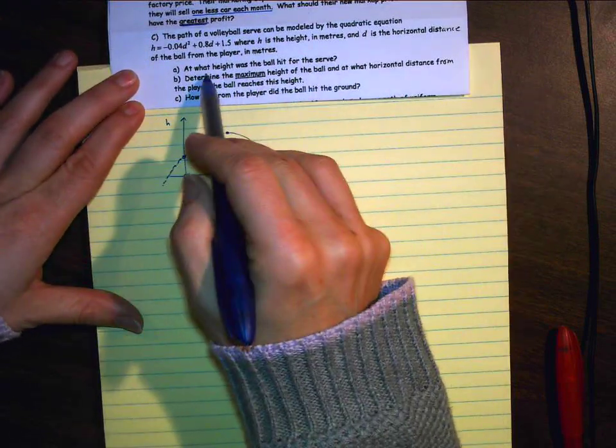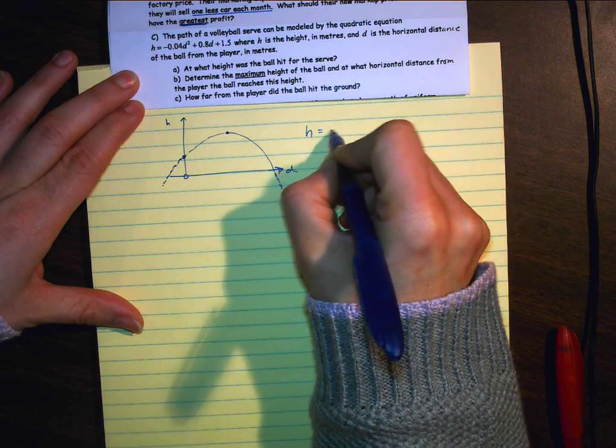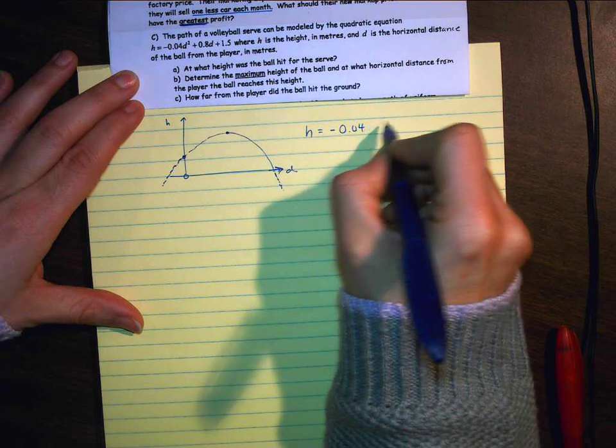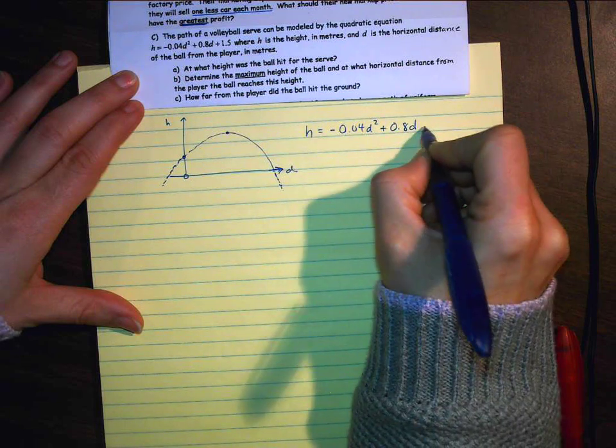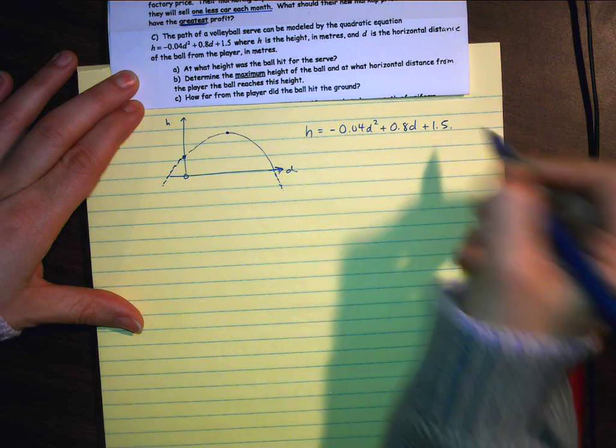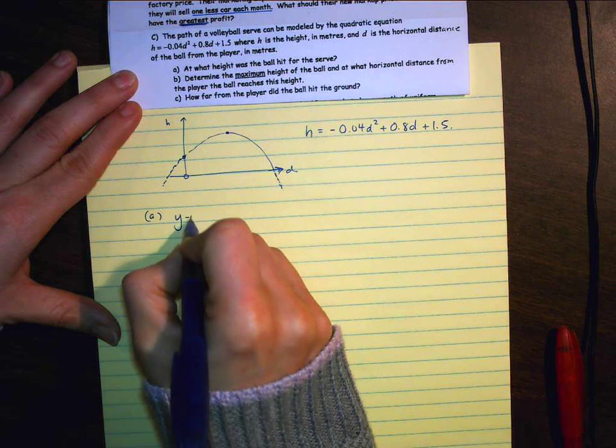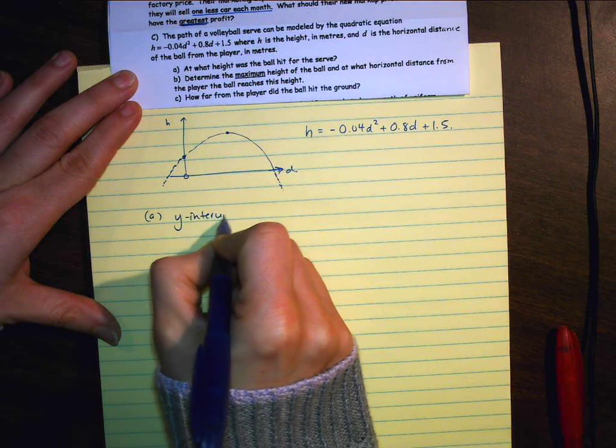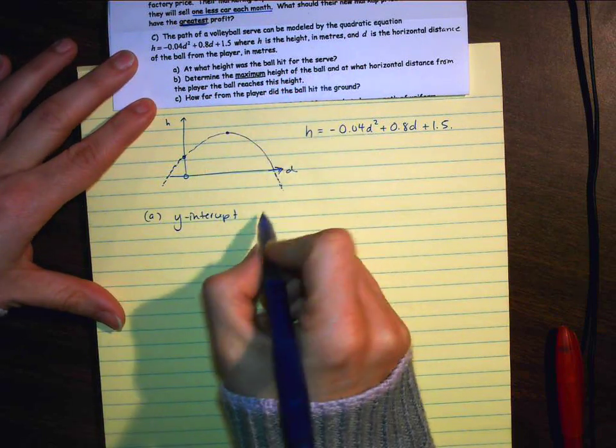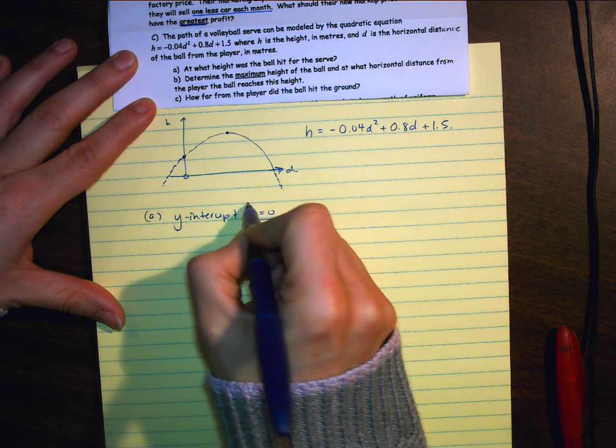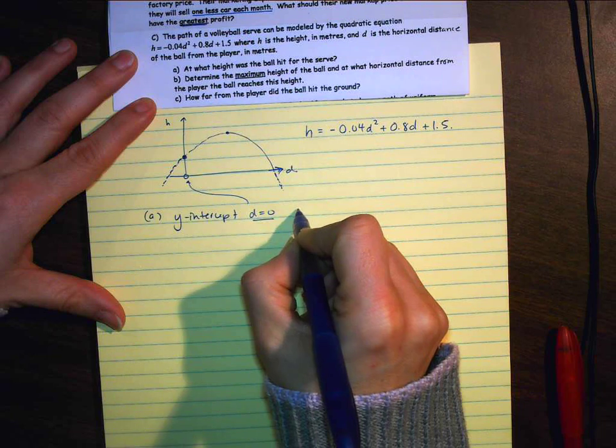So it says, at what height was the ball hit for the serve? So I'm going to write down the formula here, negative 0.04d squared, 0.8d plus 1.5. So for A, we're looking at the y-intercept because they asked at what height was the ball hit for the serve. So that's when d equals zero. So that's right here. That's going to be here. And that's just going to be c.